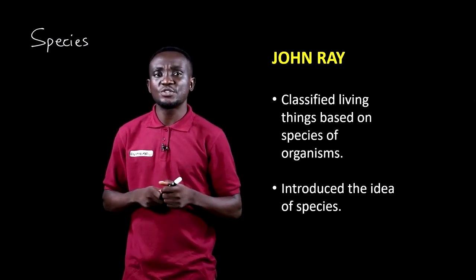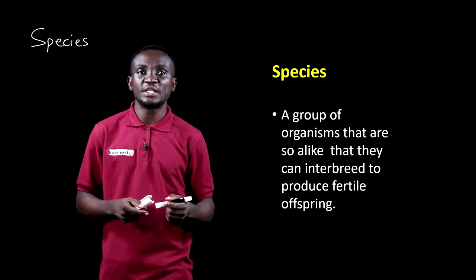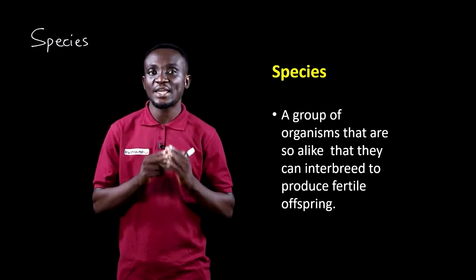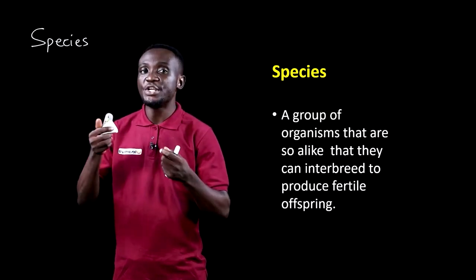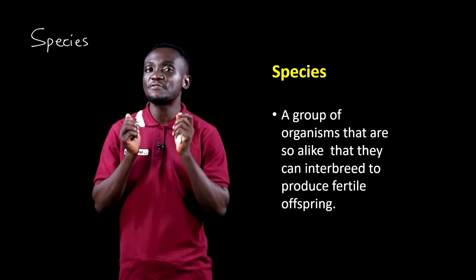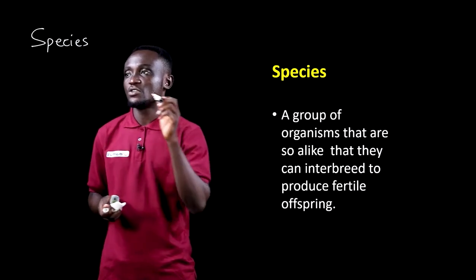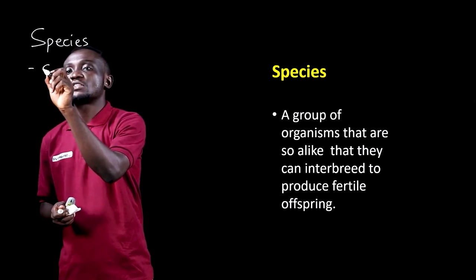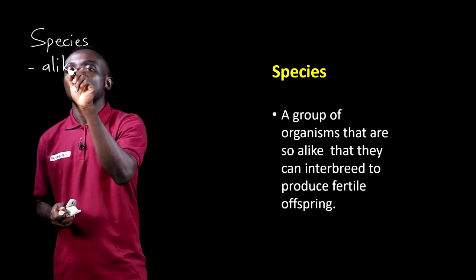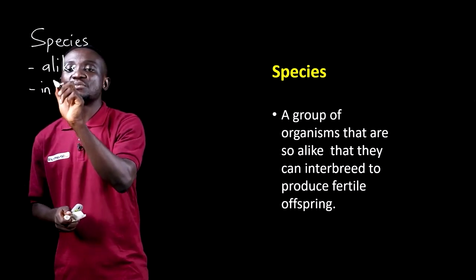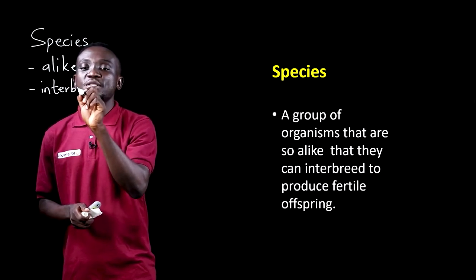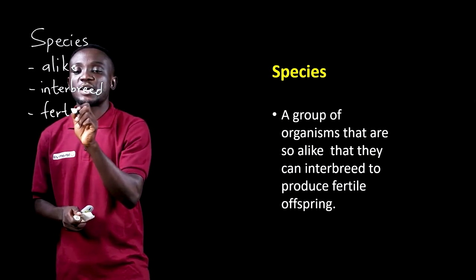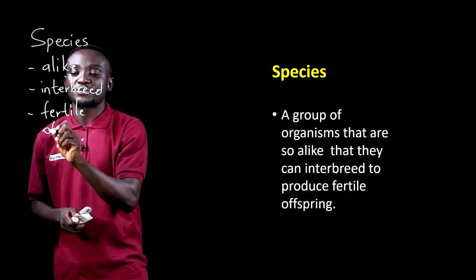As far as the word species goes, we define it as a group of organisms that are so alike that they can interbreed or mate to produce fertile offspring. So the key words in the definition are that the organisms should be alike, and when they interbreed or mate they should be able to produce fertile offspring.